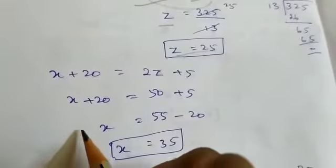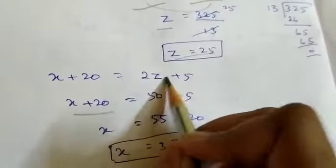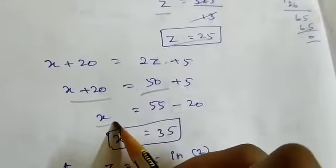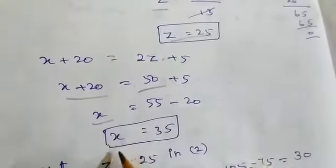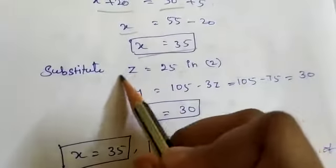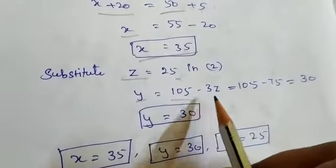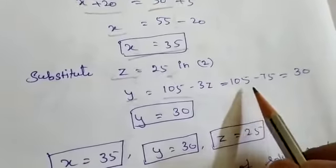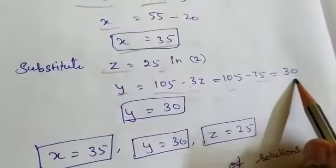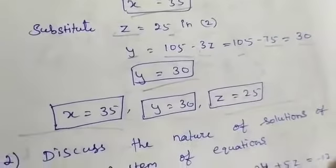From x plus 20 equal to 2z plus 5, substituting z equal to 25: x plus 20 equal to 2 into 25 plus 5, which is 50 plus 5 equal to 55. So x equal to 55 minus 20 equal to 35. Then y equal to 105 minus 3 into 25 which is 75, giving y equal to 30. So y equal to 30, x equal to 35, and z equal to 25.